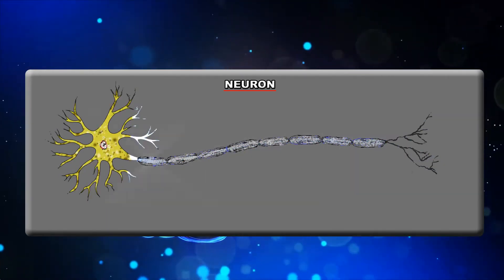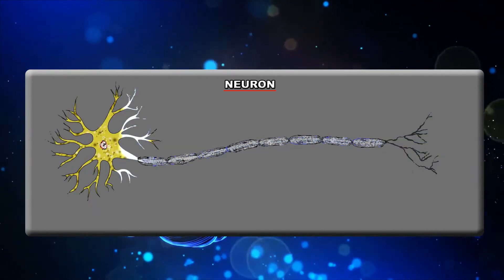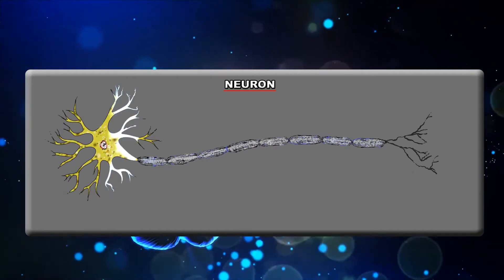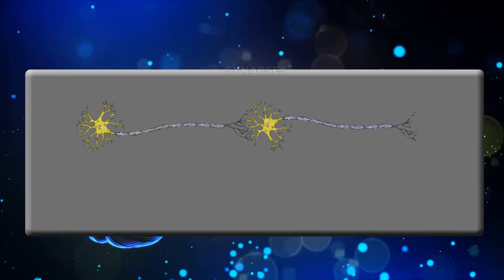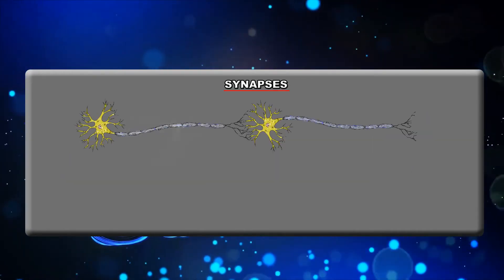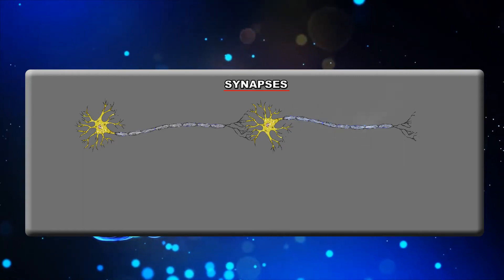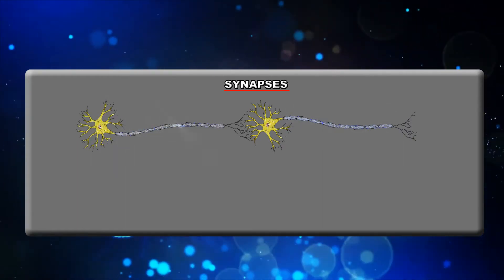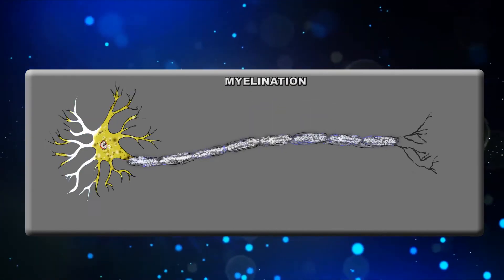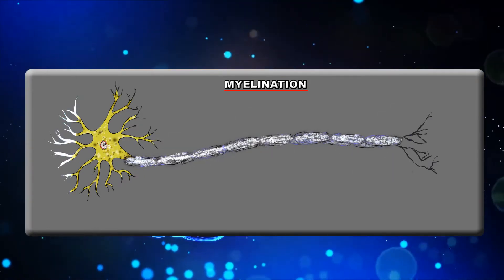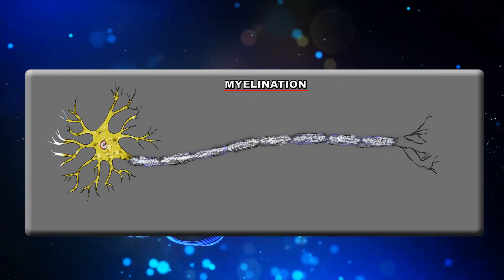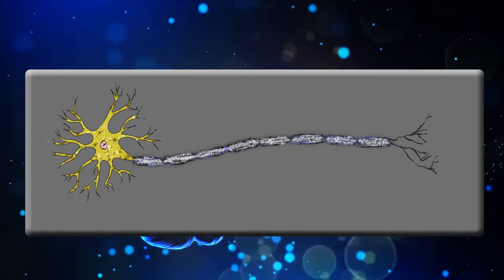The function of neurons is to transmit messages to and from the brain via electrical signals across structures called synapses. Synapses are structures that connect one neuron's head to another neuron's tail called the axon. The third important term is myelination. Myelination is a process of covering the axons with a fatty substance called myelin. This covering allows signals to travel faster through the neuron.